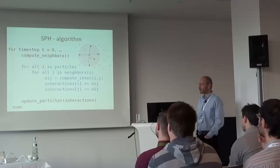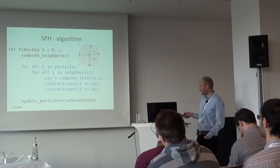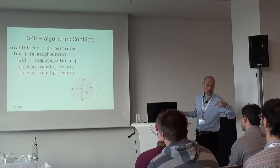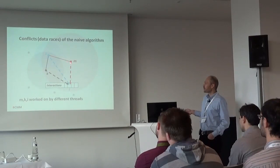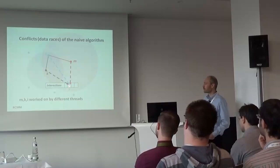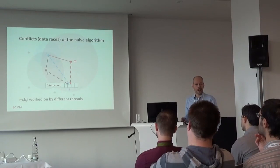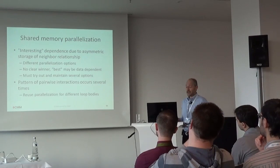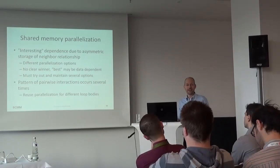We have interesting dependencies here and there are different options to deal with that. I will present one in detail — which is not the best one but the only one that fits on the slide. It's also not clear what the best strategy is, so we need to implement several of them. We also have this loop pattern over particles in several places in the code because different types of interactions are computed, and we want to reuse our parallelization for different loops. This is where generic programming comes into play.